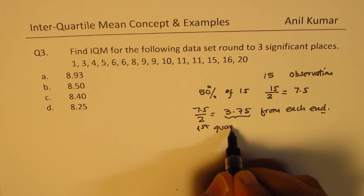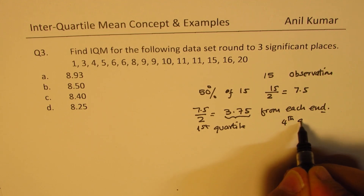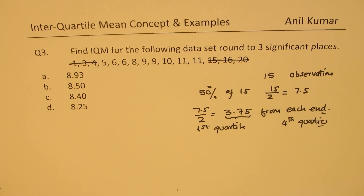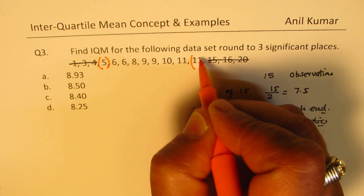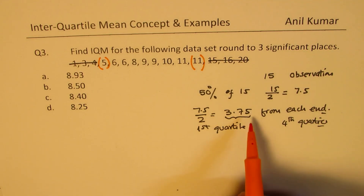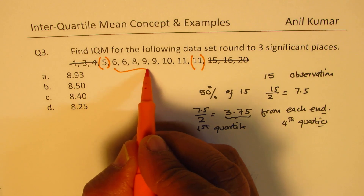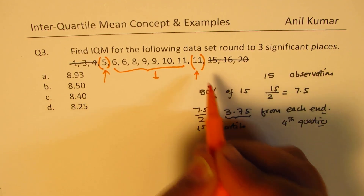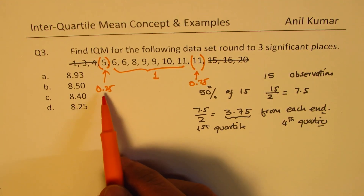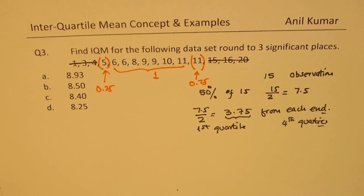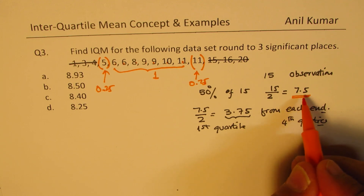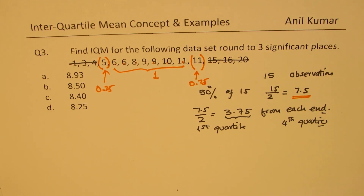We remove 3.75 from each end, meaning 3 full values are excluded and the 4th boundary term gets only 25% weight (since we remove 75% of it). The middle 7 values get full weight of 1, and the two boundary terms get weight 0.25 each — making the total weight 7 + 0.25 + 0.25 = 7.5.